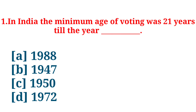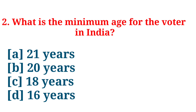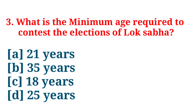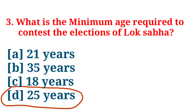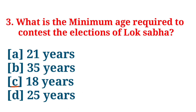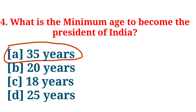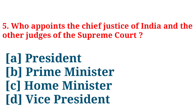In India, the minimum age of voting was 21 years till the year 1988. What is the minimum age for voters in India? Answer: 18 years. What is the minimum age required to contest the election of Lok Sabha? Answer: 25 years. What is the minimum age to become the President of India? Answer: 35 years.